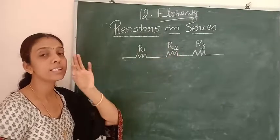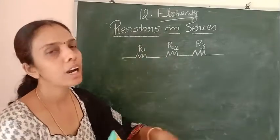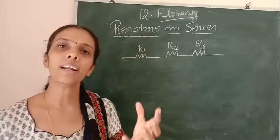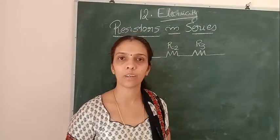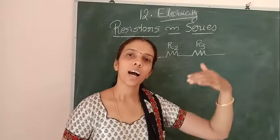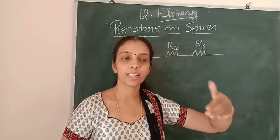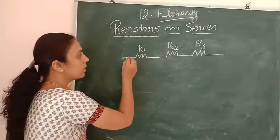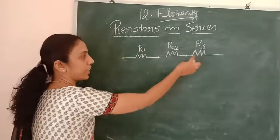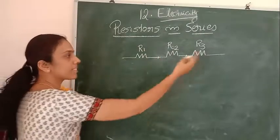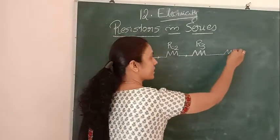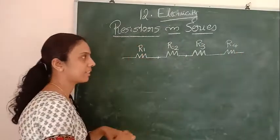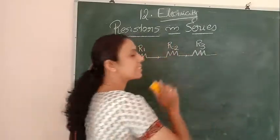That is called a series connection. Series connection means one end of one resistor will be connected to the other end of the next one. So only one end will be connected together. The free end will be connected to the next one. Like that it will go on with more resistors. That is resistors in series.